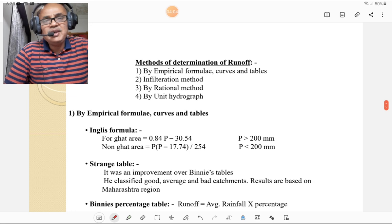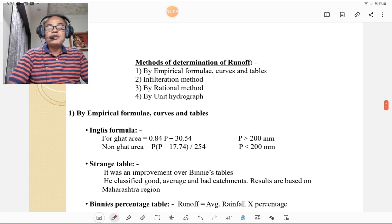Then we will discuss the methods of determination of runoff. First method is by empirical formulae, curves and tables. Second by infiltration method. Third is by rational method. And fourth is by unit hydrograph method which is very important. But we will discuss this method in the chapter hydrograph.